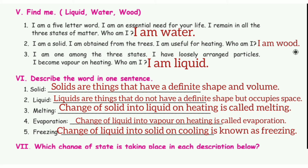2. Liquid — Liquids are things that do not have a definite shape but occupy space. 3. Melting — Change of solid into liquid on heating is called melting. 4. Evaporation — Change of liquid into vapor on heating is called evaporation. 5. Freezing — Change of liquid into solid on cooling is known as freezing.